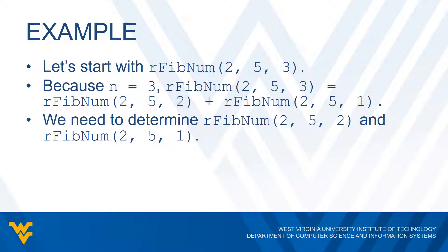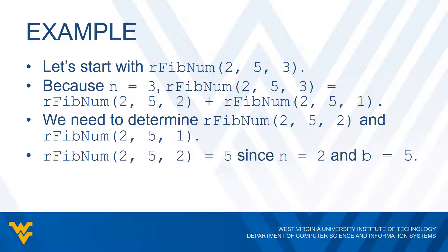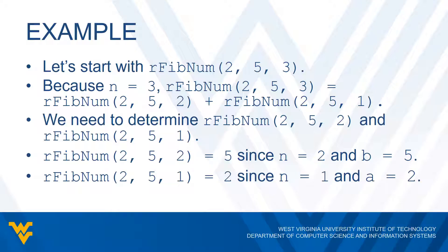Fortunately, both of these cases are pretty straightforward. RFibNum(2, 5, 2) is going to be five, because N is two and B is five — by our recursive definition, we just take B, and since B is five, this gives us five. Likewise, for RFibNum(2, 5, 1), N is one, so by our definition we take A, and since A is two, this result is two. Therefore, to compute RFibNum(2, 5, 3), we add five and two together and that gives us seven.